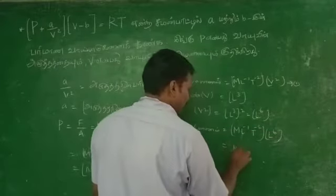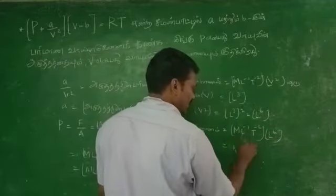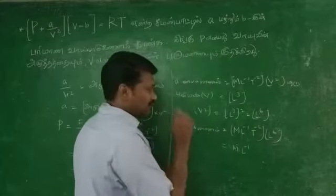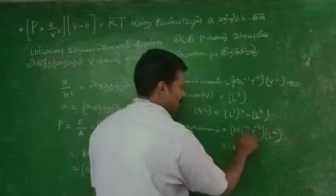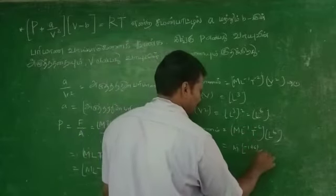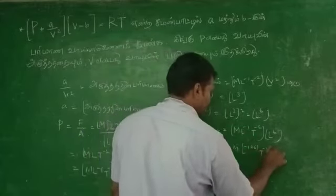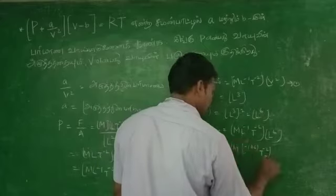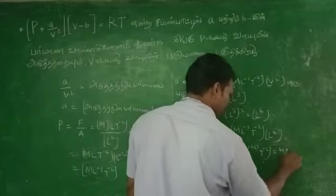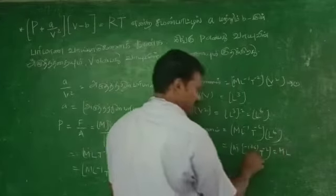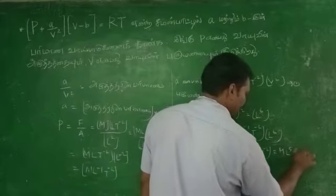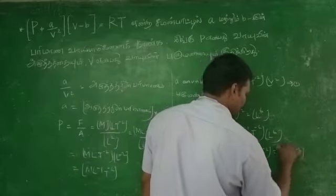So, M is equal to L. We can add minus 1 plus 6, T power minus 2. So, M is equal to L, L power 5, T power minus 2.